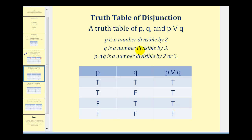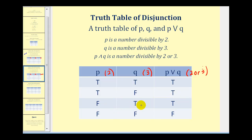Using the same example where P represents divisibility by two and Q divisibility by three, P OR Q means divisible by two or three. If the number is divisible by both, it satisfies the disjunction. If divisible by two but not three, still true. If divisible by three but not two, still true. Only if divisible by neither is the disjunction false.